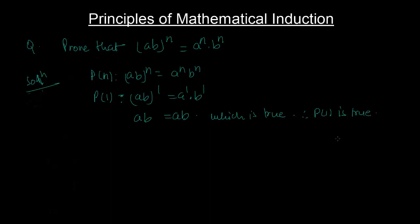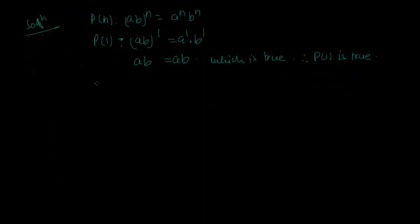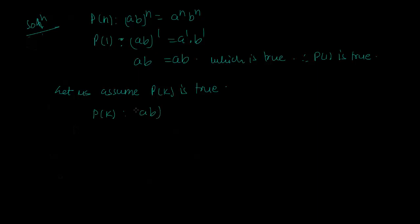Now we come to the next part. Let us assume P(k) is true. So we say that P(k): (a·b) to the power k is equal to a to the power k times b to the power k.